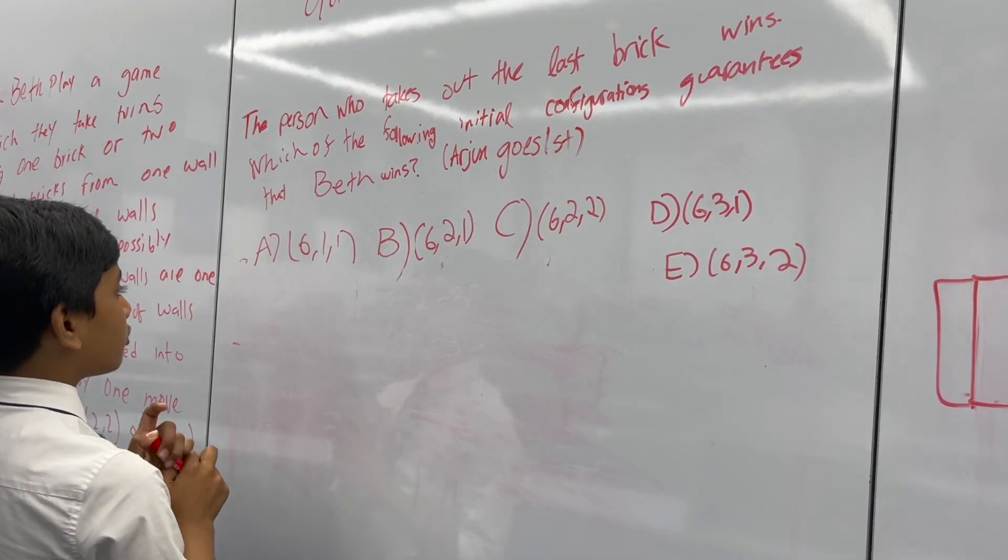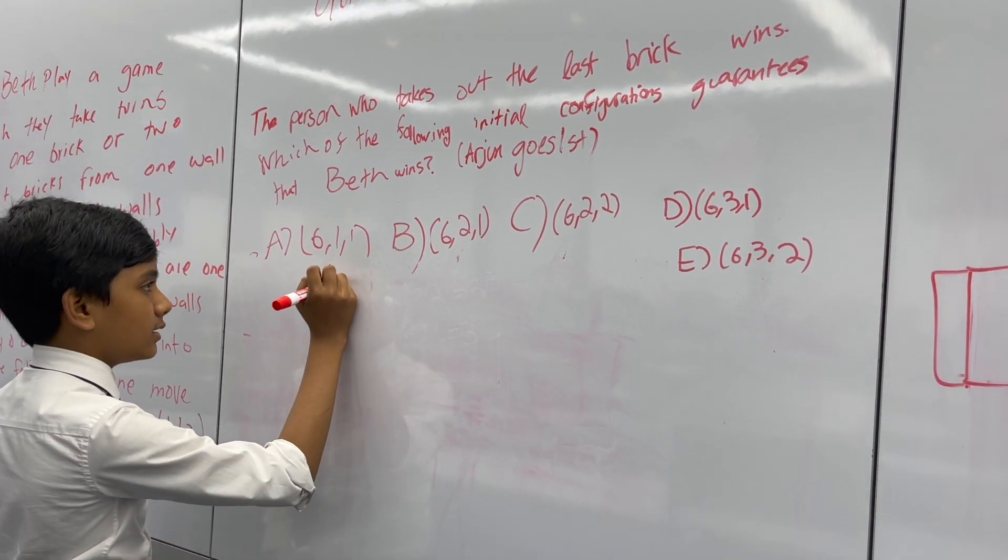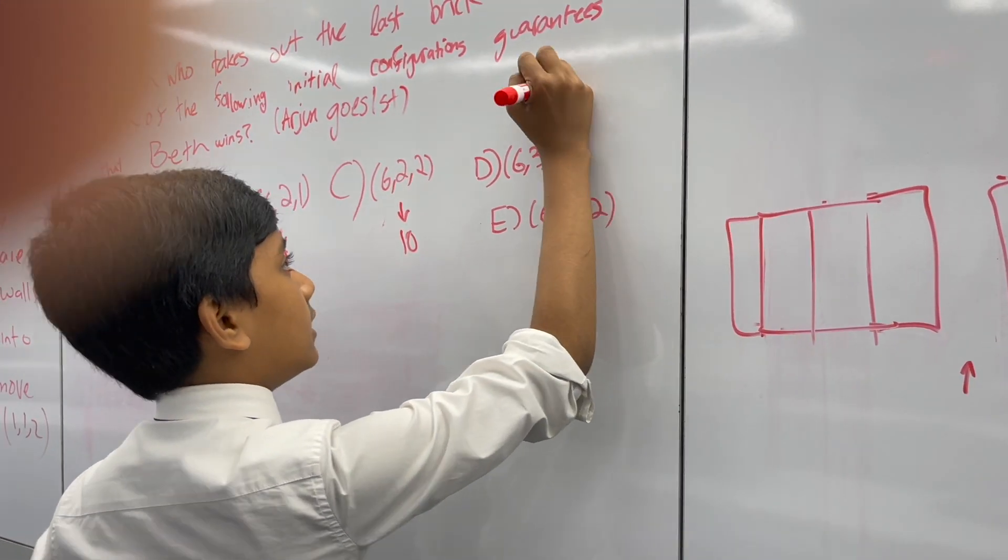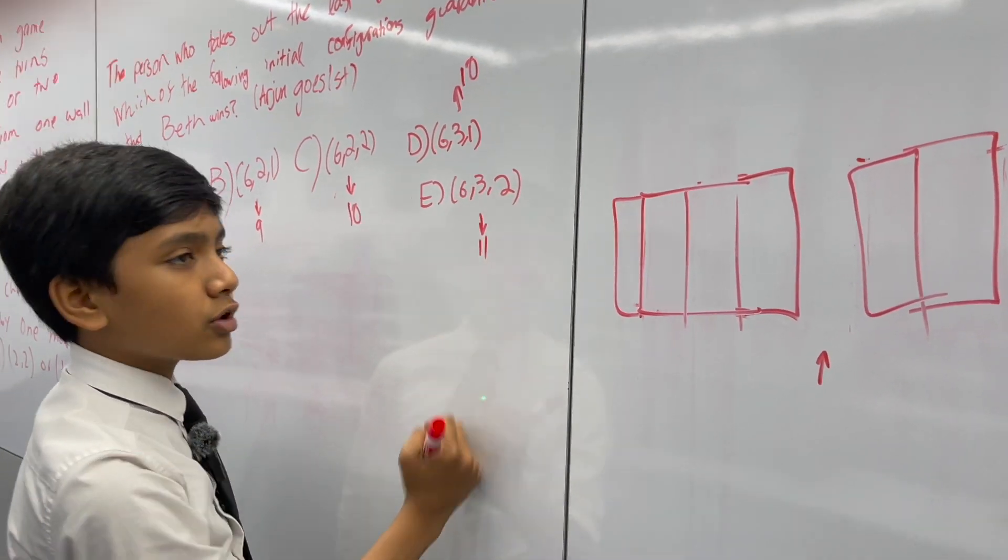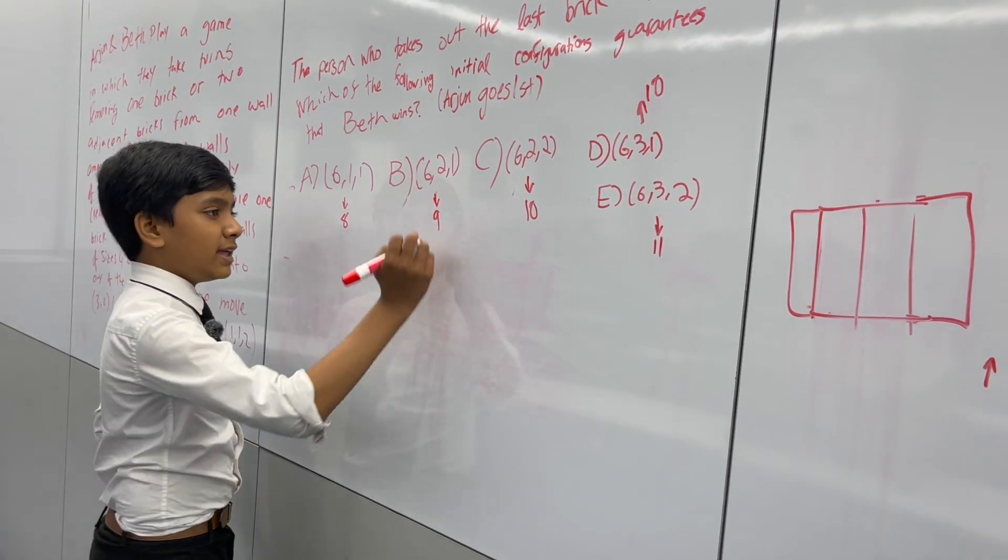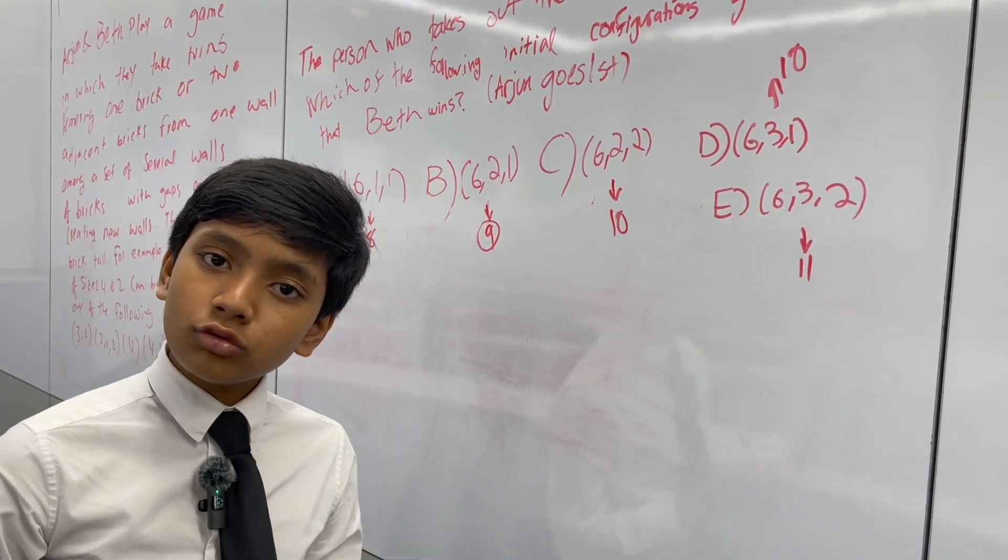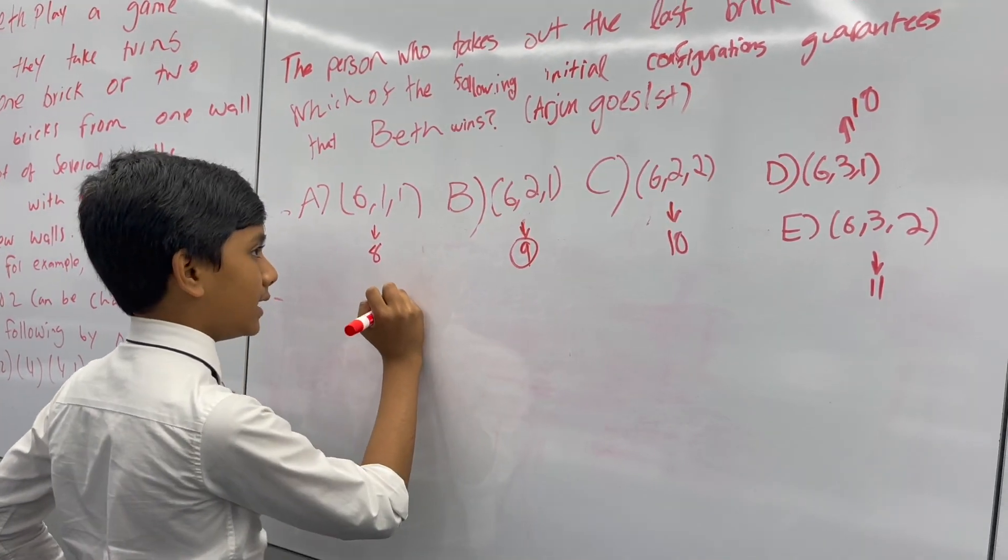Now let's see how many bricks there are in each configuration. This one is eight. This one is nine. This one is ten. This one is also ten. This one is eleven. Now the only multiple of three here is nine. But we're not done yet. We still have to check, because those two are similar but not completely the same games.